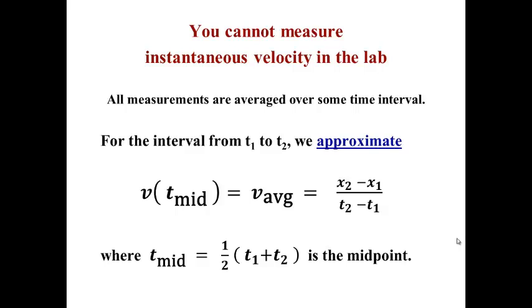For some time interval from t1 to t2, we calculate the average velocity from delta x over delta t, and we assume that is equal to the instantaneous velocity at the midpoint of that interval. This is an excellent approximation that can be justified with calculus. In fact, it is exactly the instantaneous velocity if the acceleration is constant, so for many things we do in the lab, this goes beyond an approximation to being nearly exact.